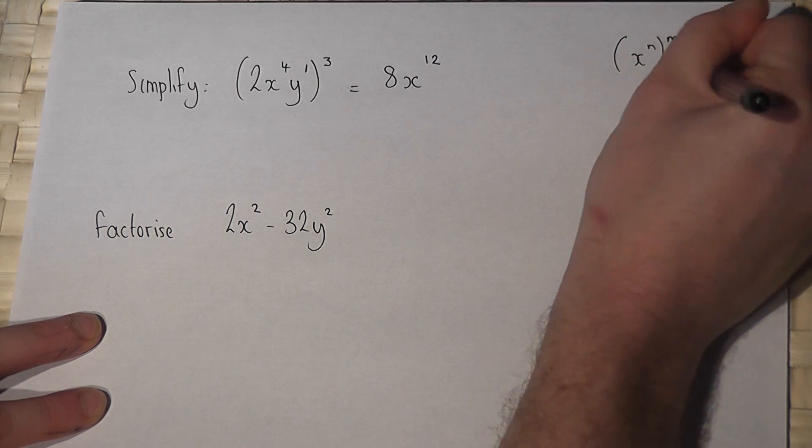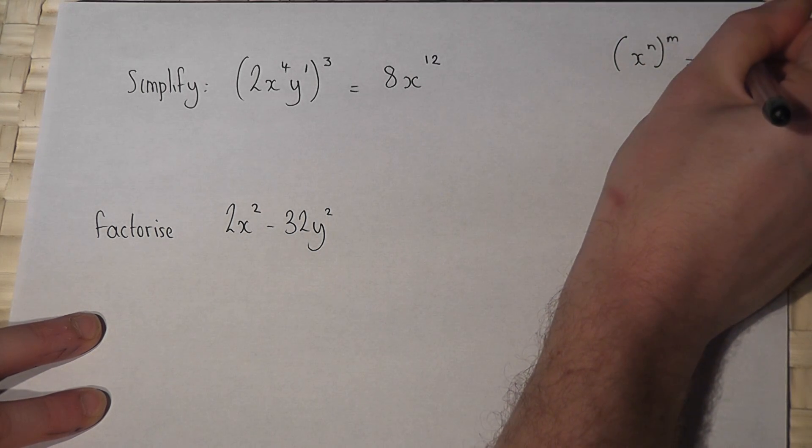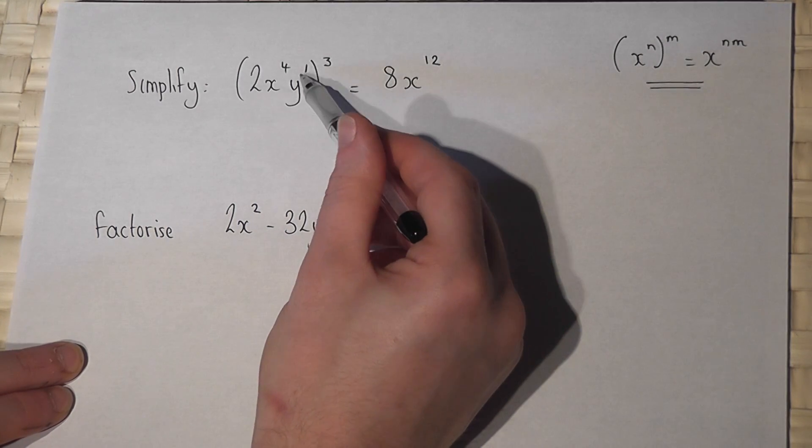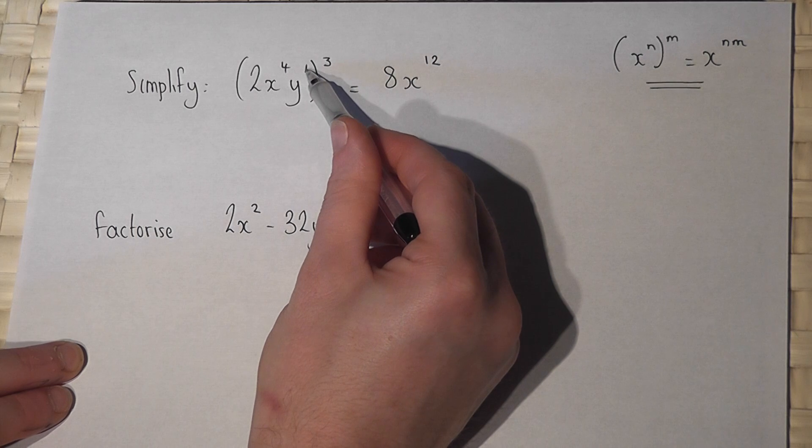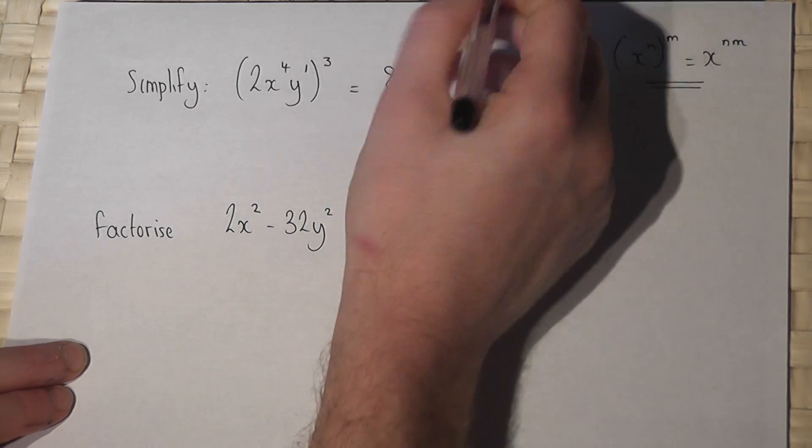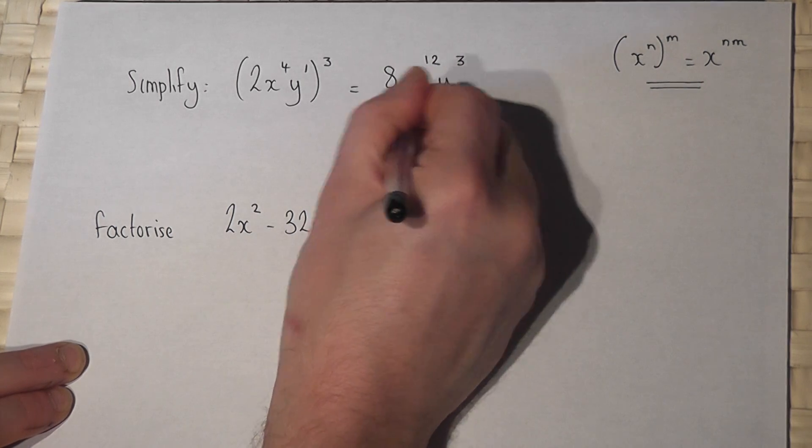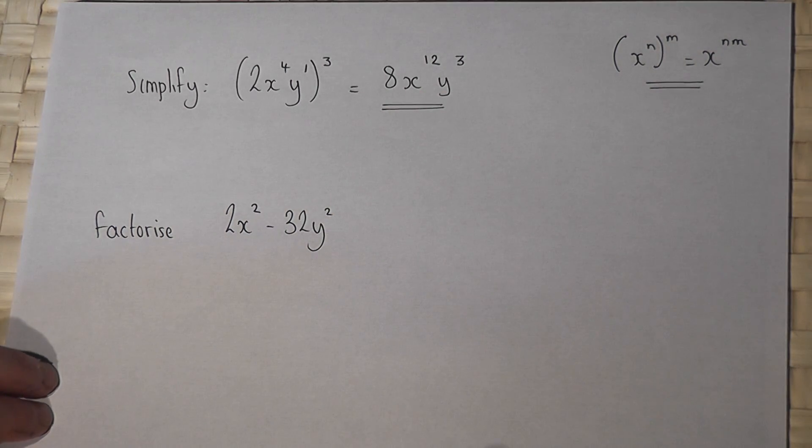In a similar way y to the power of 1 all cubed, 1 times 3 is 3, so this becomes y cubed. So the answer is 8x to the power of 12 y to the power of 3.